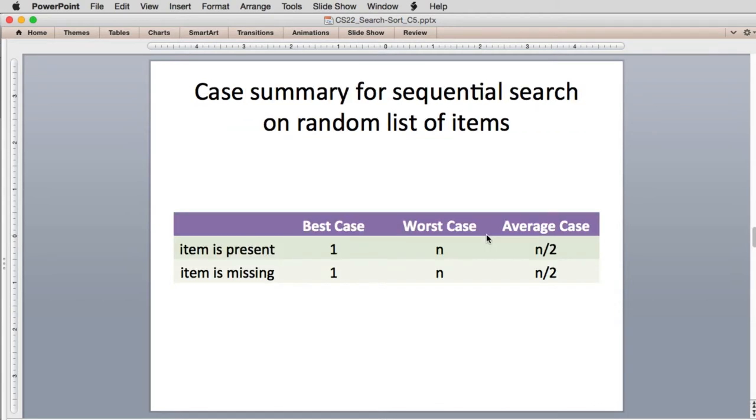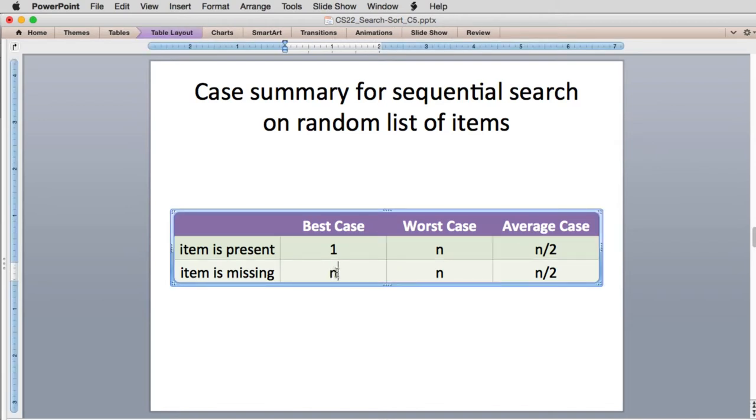So that changes this slightly. Everything's the same here, except the—this is a problem, this should be N—so except if the item is missing, the average case, if it's missing, is N over 2. And the best case is 1, because it could be that the item you're searching for is less than the first item in the list.